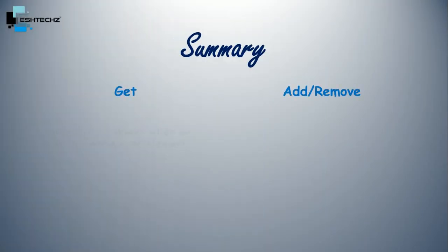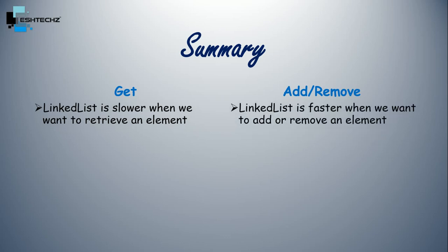So for get operation, LinkedList is slower when we want to retrieve an element. And for add or remove operation, LinkedList is faster when we want to add or remove an element. Big O notation for get operation is O(n) because it depends on the size of input.